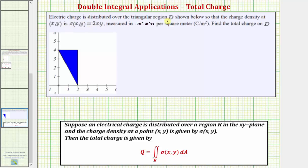Electric charge is distributed over the triangular region D shown below, so the charge density at the point x comma y is given by sigma of x comma y equals two xy, measured in coulombs per square meter. We're asked to find the total charge on the region D.